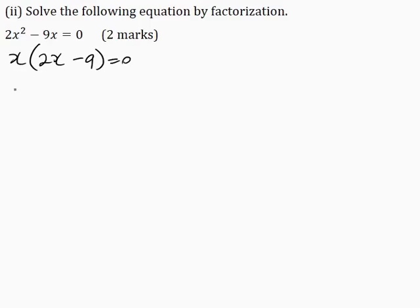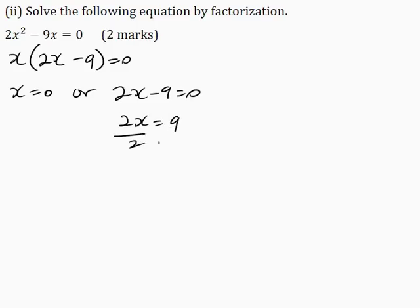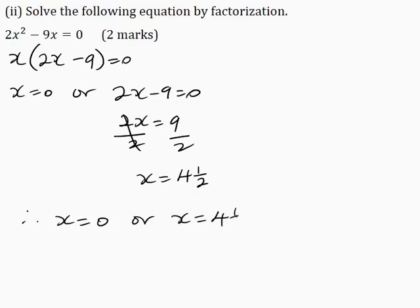Now we can solve for the x values. x is equal to 0, or 2x minus 9 is equal to 0. So 2x is equal to 9. Dividing both sides by 2, x is equal to 4.5. Therefore, x is equal to 0 or x is equal to 4.5.